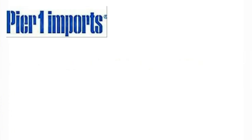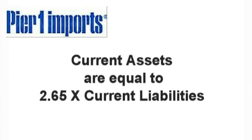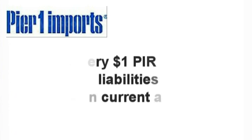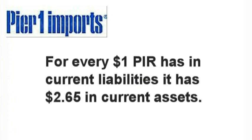Pier 1's current ratio is 2.65. This can be expressed in times or in dollars. It simply states that Pier 1 has 2.65 times as much in current assets as it does in current liabilities. You could also say that for every dollar that Pier 1 has in current liabilities, it has $2.65 in current assets.